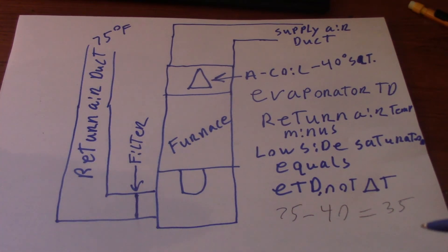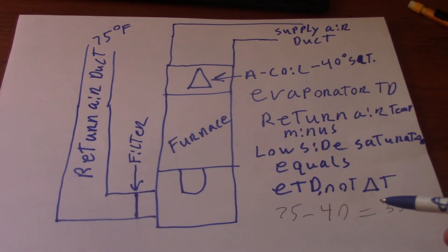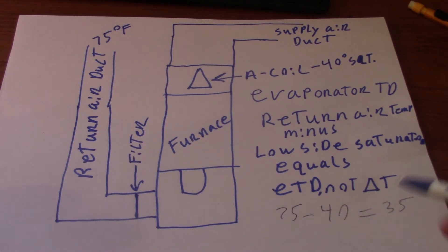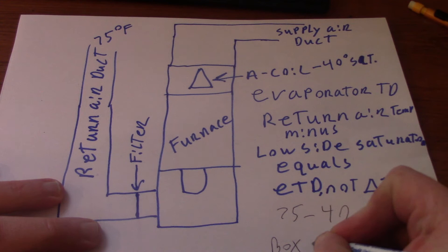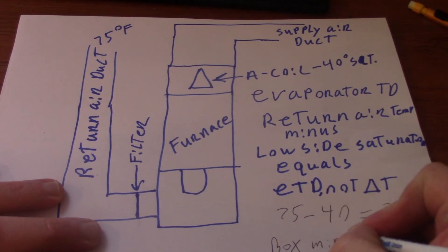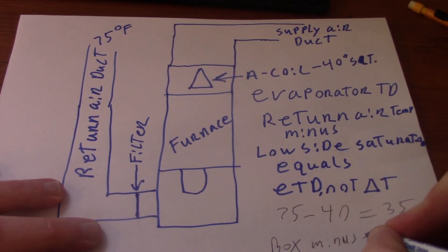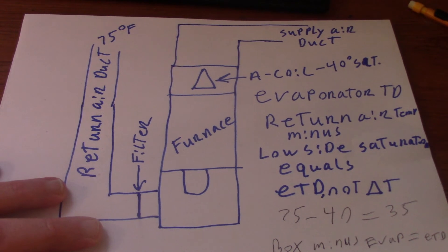Your evaporator TD plays an effect in commercial refrigeration. If you have a walk-in cooler, you want to be 10 degrees. If it's a reach-in cooler, you want 20 degrees. To calculate it for refrigeration, it's going to be your box temperature minus your evap temperature. That will give you evaporator TD for refrigeration.